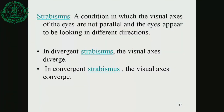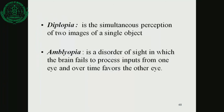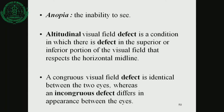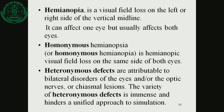To summarize the visual field defect terms: strabismus (divergent and convergent), diplopia, amblyopia, scotoma (positive and negative), anopia, hemianopia (homonymous hemianopia and heteronymous hemianopia).